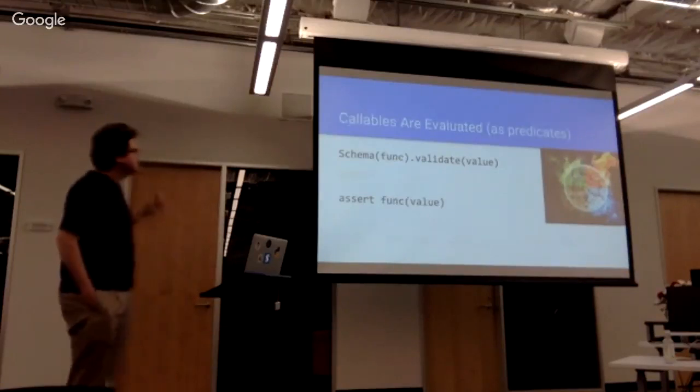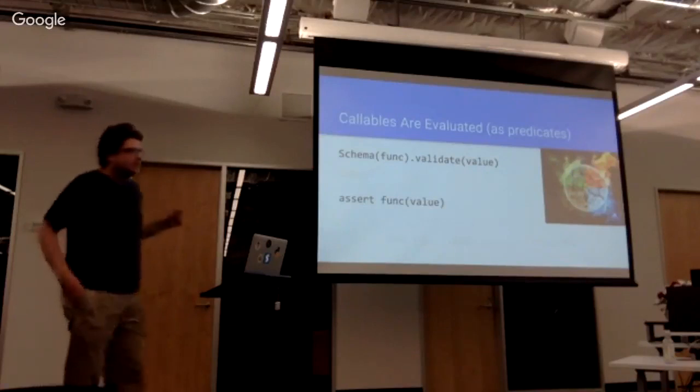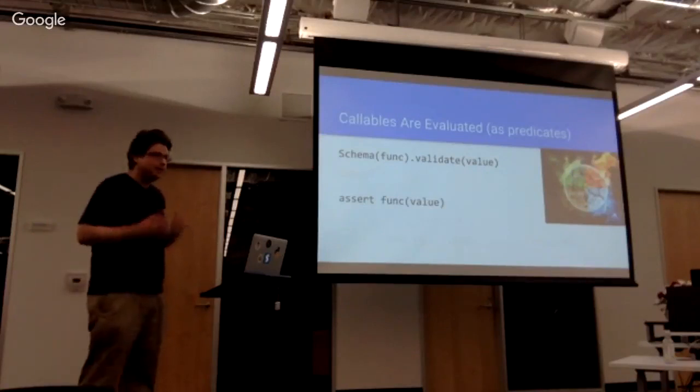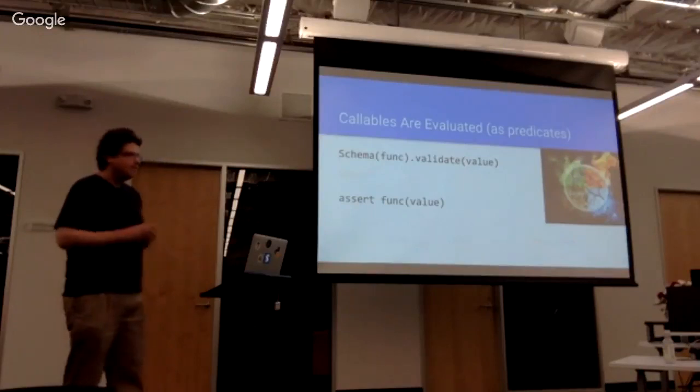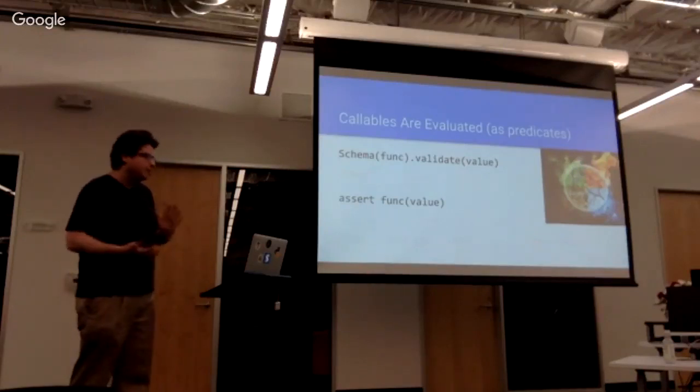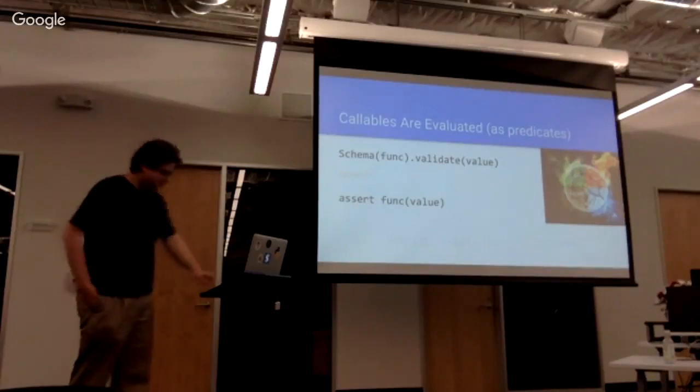And callables are evaluated as predicates. So this means any time you put a callable in as a schema, it will be called with the current value. And if it returns true, that means it validates. If it returns anything not truthy or raises exception, that means it doesn't validate.